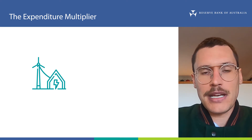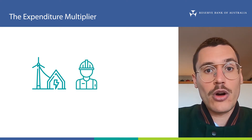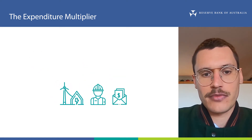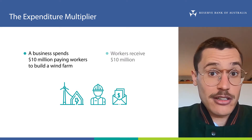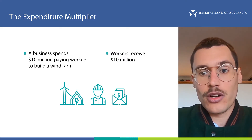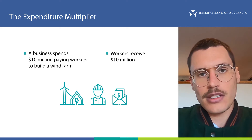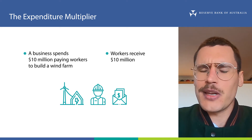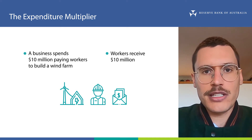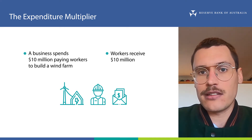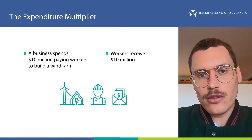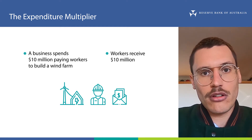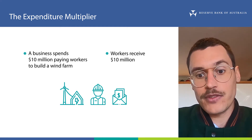Imagine we're a company that's building a wind farm. We would need workers to help us build the wind farm and we would have to pay their wages. Let's say we spent 10 million dollars paying the wages of the workers over the course of building the wind farm. Now, these workers are going to spend some of their wages, but probably not all of them. They'll probably save some of the money they received as wages as well. The amount that the workers spend versus the amount that they save is crucial for working out the contribution of that 10 million dollars we spent to GDP.